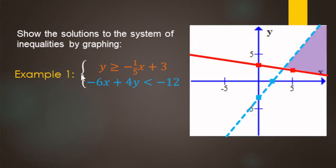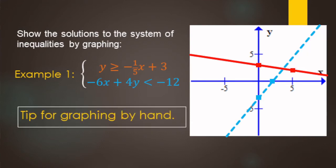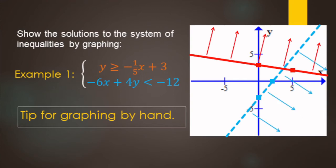Quick tip for graphing by hand: when all your shadings get messy, instead of fully shading regions on your paper, just use arrows — arrows pointing up for shading above, and arrows pointing down for shading below. Your solutions will be where you have double arrows, making it much neater when graphing by hand.